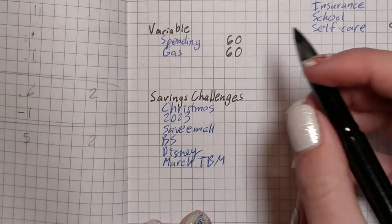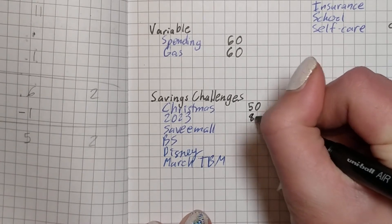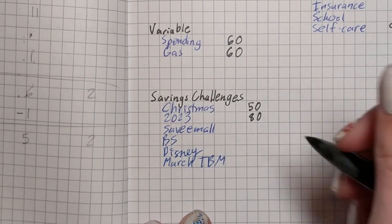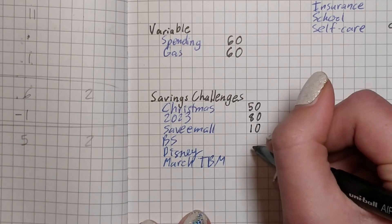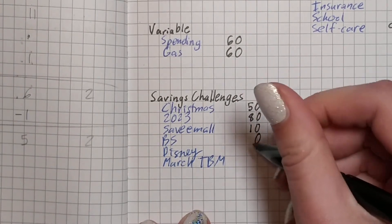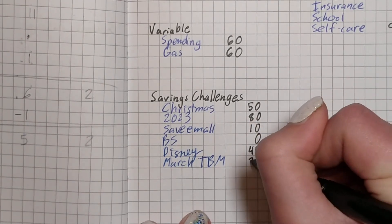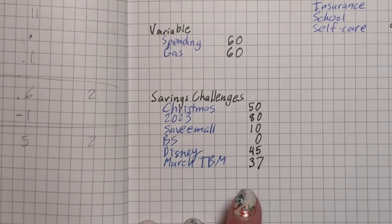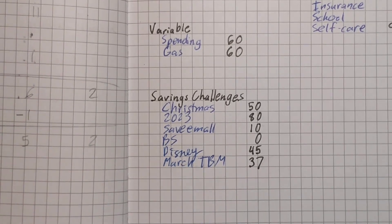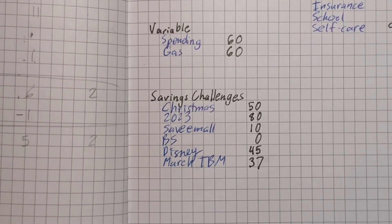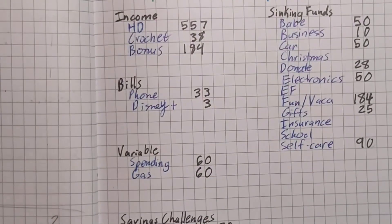Down to savings challenges, we have $50 for Christmas, $80 for Save 2023, Pokemon challenge Gotta Save Them All is getting $10. BS is not getting anything, that's babysitting. Disney is getting $45, and the March TBM, which is saving for my friend's wedding present, that will be complete. So I'll probably take that out next time I do a video because that will be fully funded with this money here.